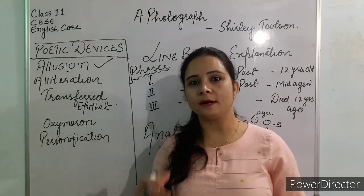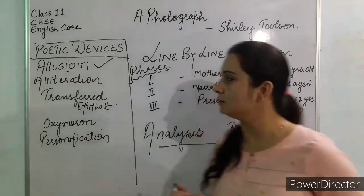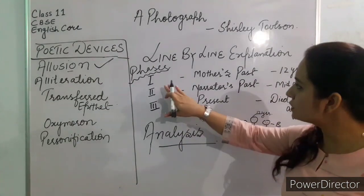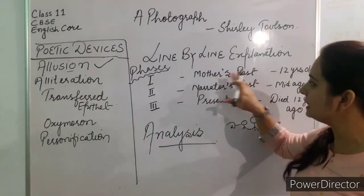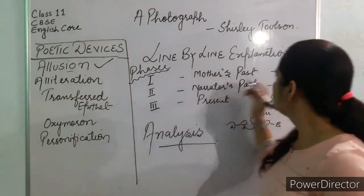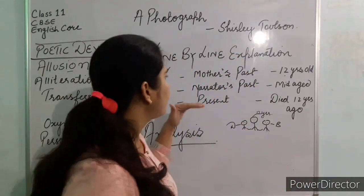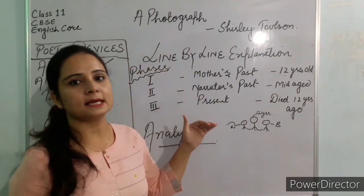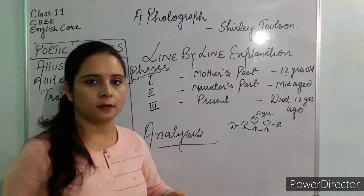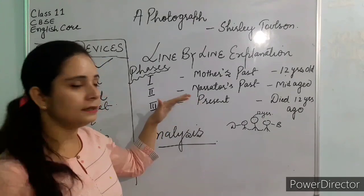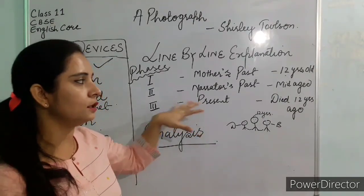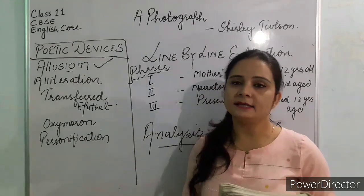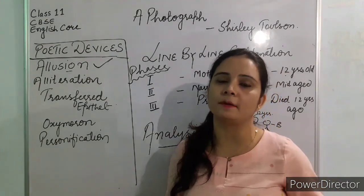Now let's understand the poem. It is divided into three stanzas, each describing a different phase of life. The first stanza describes the poet's mother's past, when she was 12 years old. The second stanza describes the narrator's past, when her mother was a middle-aged lady. The third stanza describes the phase when the poetess was writing this poem — at which point her mother had already been dead for around 12 years. This poem is a tribute to her mother.